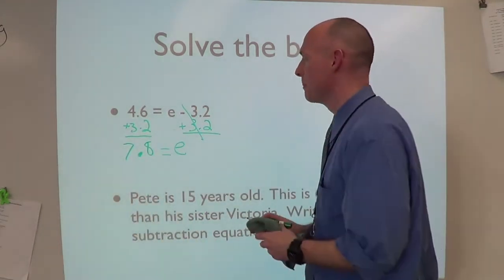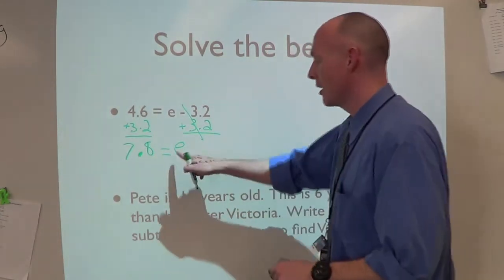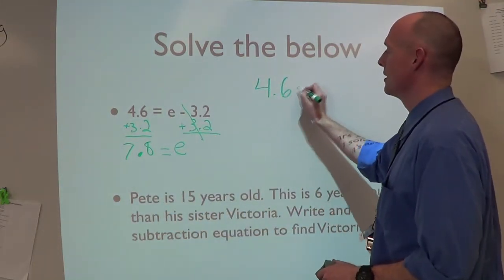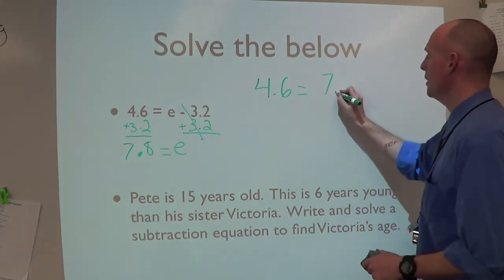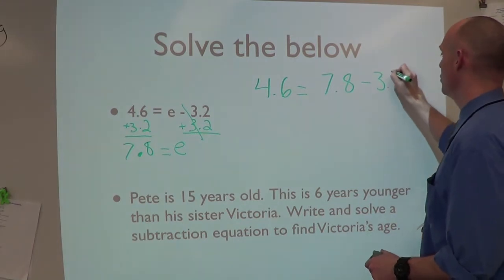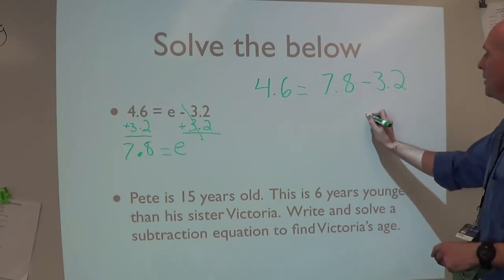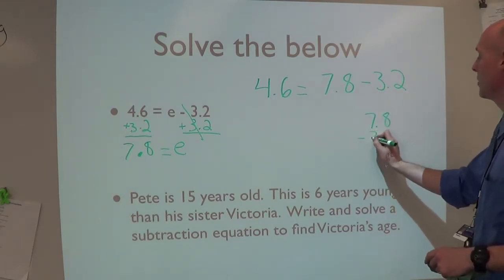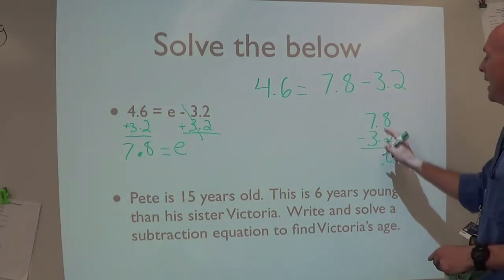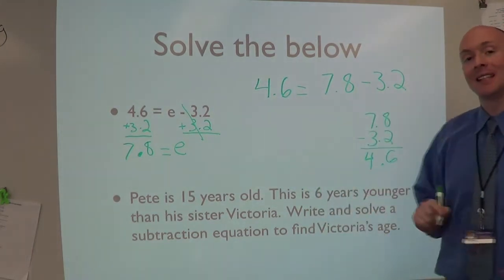Again, we think it's right, but the only way to be sure is to check our answer. Let's plug 7.8 in for e. 4.6 equals 7.8 minus 3.2. Can't do this in my head, so I'm going to do some work. 7.8 minus 3.2: 8 minus 2 is 6, bring down the dot, 7 minus 3 is 4. And would you look at that - 4.6. We're good to go.